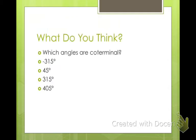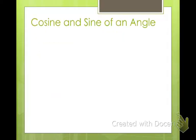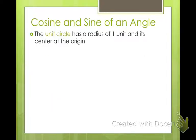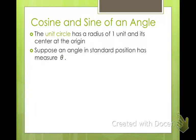You can go ahead and try this one on your own. Find out which of these angles are coterminal. So, cosine and sine of an angle. The unit circle has a radius of one unit and its center at the origin. I'm going to put up a unit circle here in a minute, and I'm going to need you to memorize it. I know it's a lot of information,